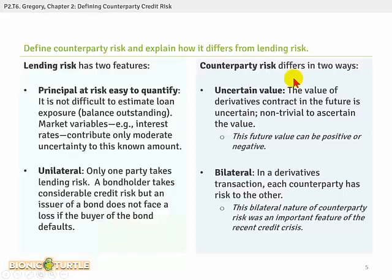As opposed to counterparty risk — a good association is a derivative, even if not technically always a derivative we're talking about. A derivative is the best example of counterparty risk because it highlights two key differences. First, the uncertain value: whereas with a loan or bond the exposure is the balance outstanding, in the case of a derivative, which is a contract between two parties, the value is harder to ascertain and can be positive or negative. Secondly, it's bilateral — a transaction between two counterparties — and that bilateral nature is another important difference.